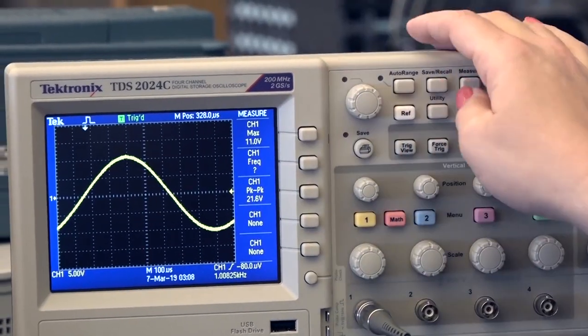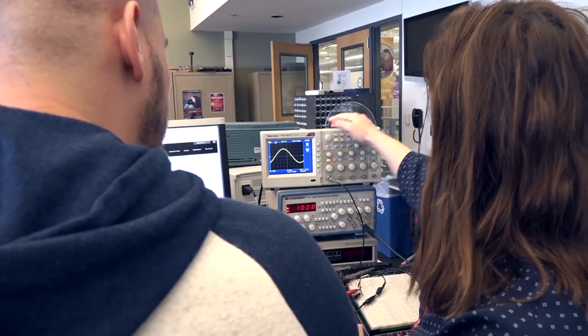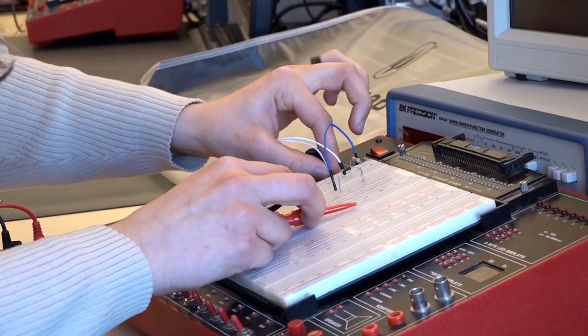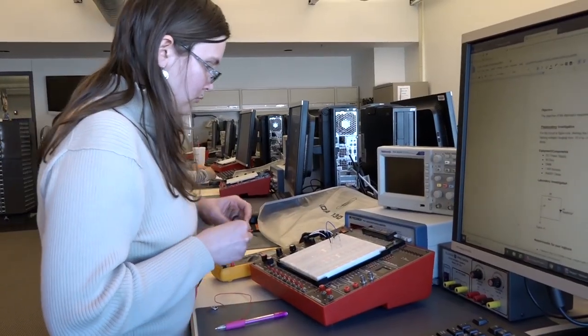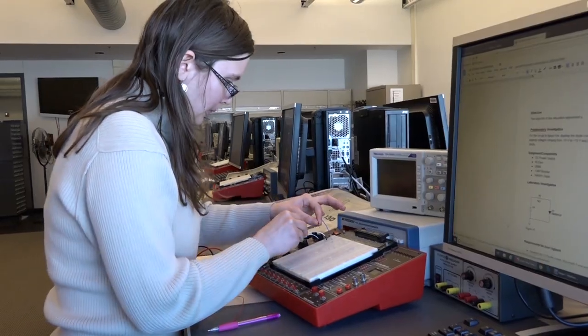One of the first equipment I learned how to use was the O-scope. We use that to test the circuits, test the voltages. Then we started using the breadboards to lay out our circuits. For me that's how I learned the best, so that's what I look forward to doing when I come here.